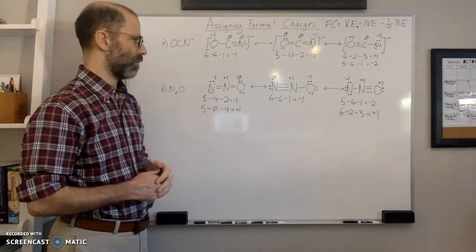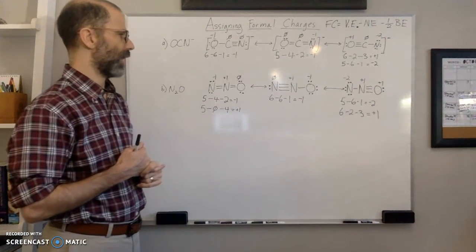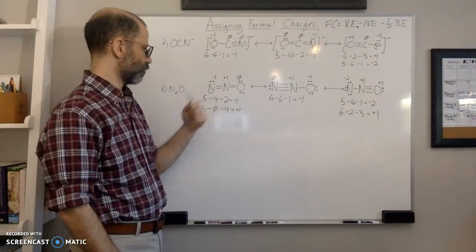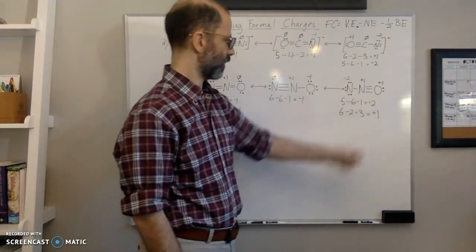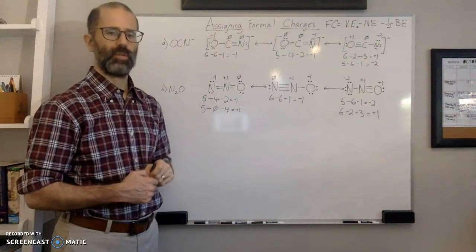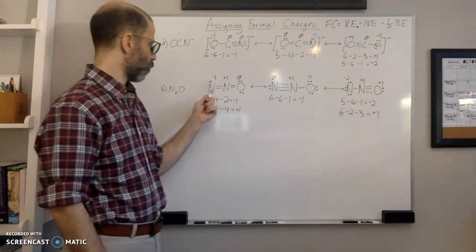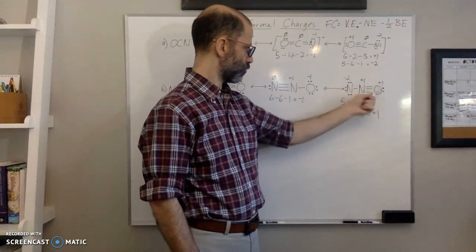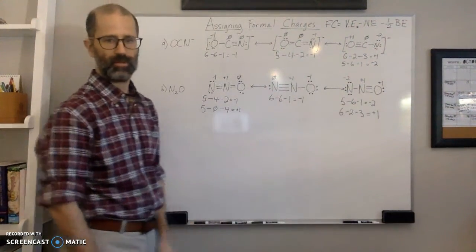Now we look at which structure is the best. Rule one: the better structure has fewer non-zero formal charges. The first and second structures each have two non-zero formal charges, while the third has three — so the third is already at a disadvantage. Rule two: the better structure has smaller formal charges. The third structure has a charge of negative two, while the others only have ones — another strike against the third structure.